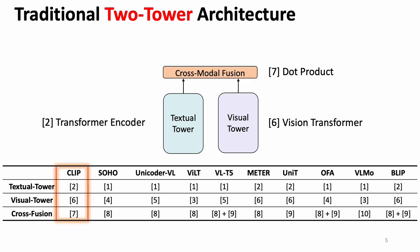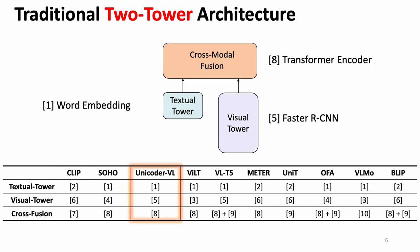For example, the CLIP model from OpenAI uses a transformer encoder as a textual tower, vision transformer as a visual tower, and dot product as a shallow cross-modal fusion module. For UnicoVR from our NLC group, word embedding is used as a shallow textual tower, Faster RCNN is used as a visual tower, and transformer encoder is used as a cross-modal fusion module.